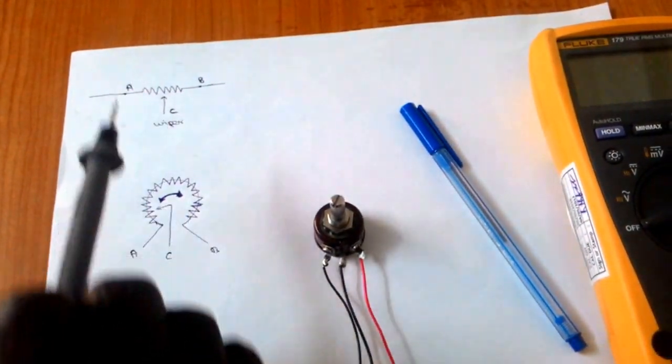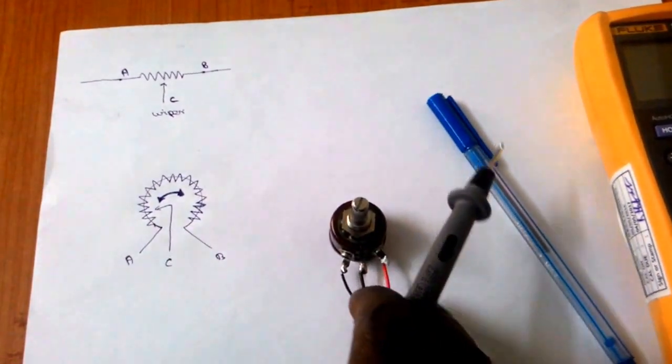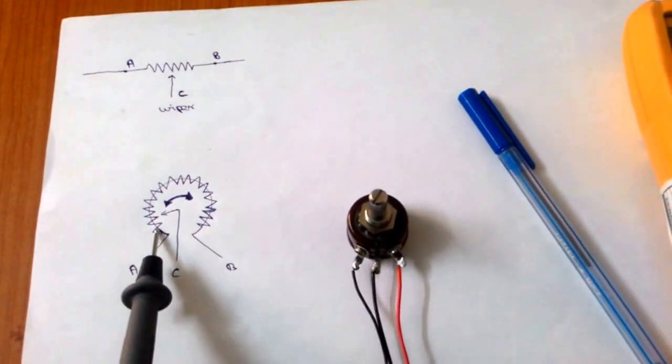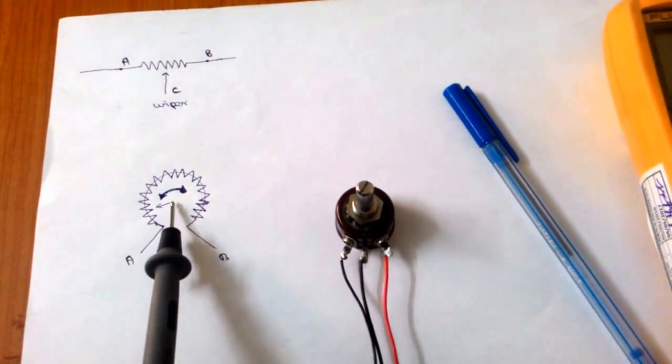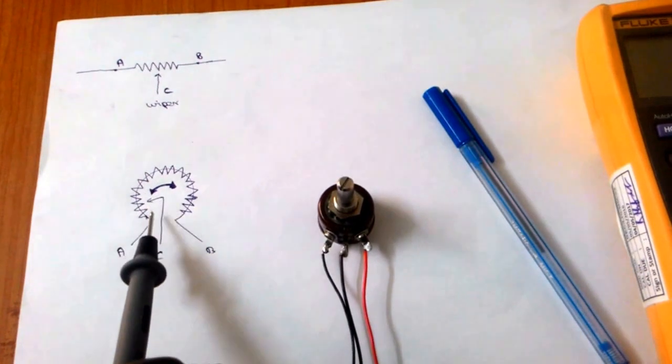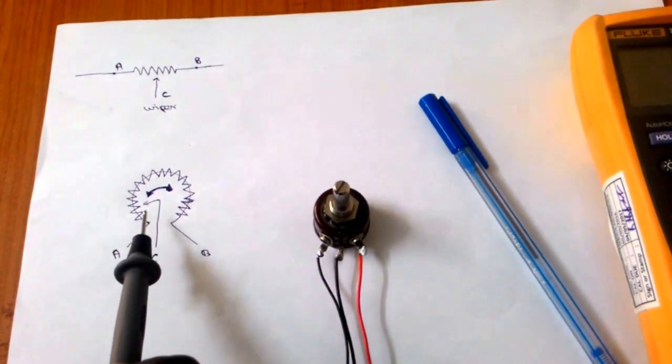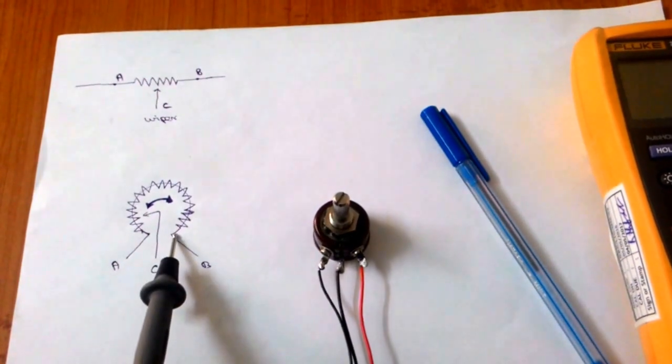So here I am mentioning linearly, here I am mentioning as a circle shape. This is what exactly inside this one. A resistance will be there here in circle shape and mid of the place a wiper is there. This wiper can freely touch from this starting to ending, that means point A to point B.